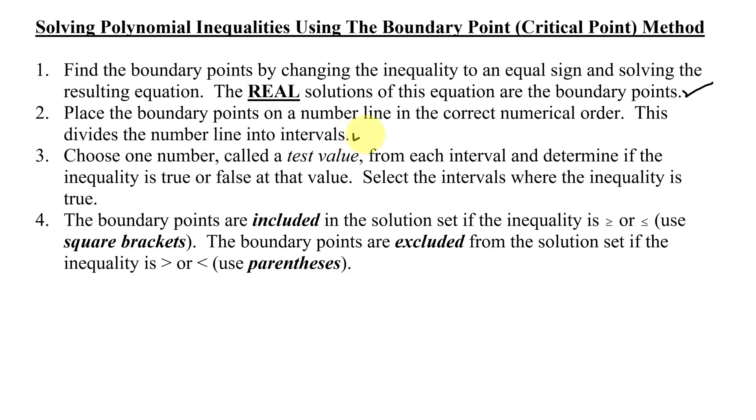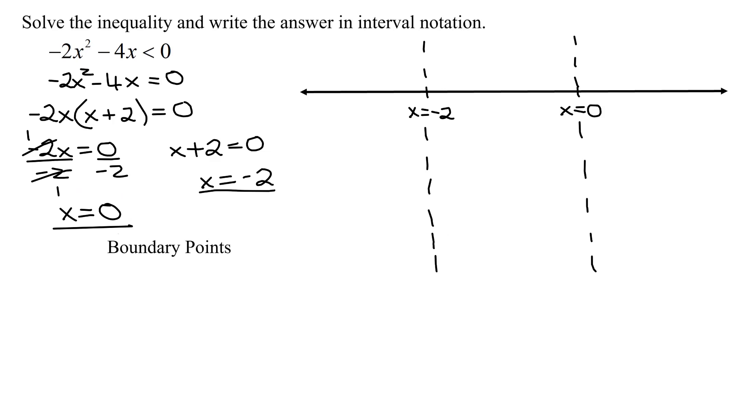So, that is step 2 completed. Step 3 says choose one number called a test value from each interval and determine if the inequality is true or false at that value. Select the intervals where the inequality is true. So, I'm going to need three test values. The first one, when x is less than negative 2, let's pick x equals negative 3. In the region between negative 2 and 0, I'm going to pick x equals negative 1. And in the region where x has to be bigger than 0, I'm going to pick x equals positive 1. I'm going to put the video on pause for a second.